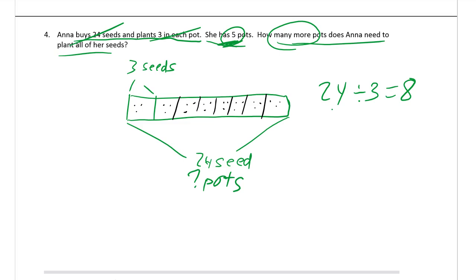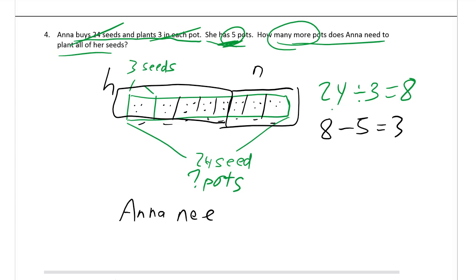And then, now you can just count the pots. And you can see that there's one, two, three, four, five, six, seven, eight pots. But she already has 5 pots. So these are the ones that she has. These are the ones she needs. 3 more. You could say she needs 8, she already has 5, she needs 3 more. You could write that down too. But I think this picture shows it. Anna needs 3 more pots.